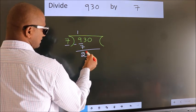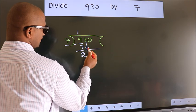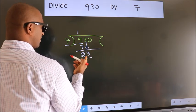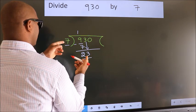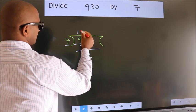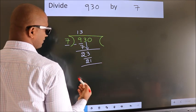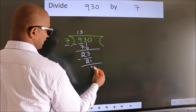After this, bring down the beside number. So 3 down, giving us 23. A number close to 23 in the 7 table is 7 threes, which is 21. Now we subtract. We get 2.